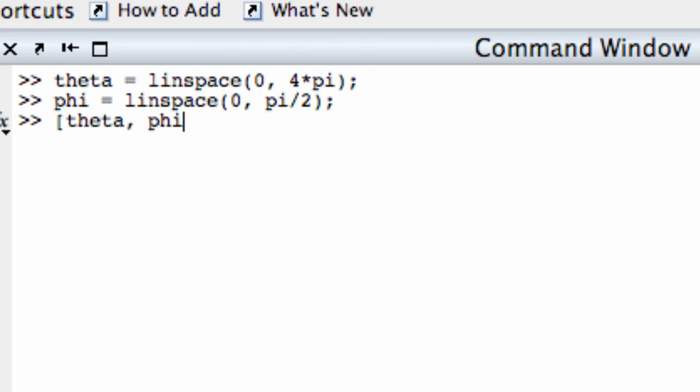And I'll tell you what rho is in just a minute. Let's go ahead and create the mesh grid. Theta phi equals mesh grid theta, phi. Now I would like rho to equal theta divided by 2. This is really a function of theta and phi, actually just of theta. Okay, got that in there.